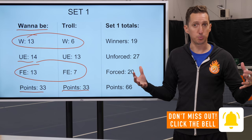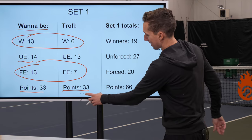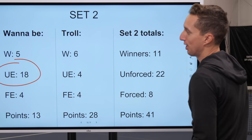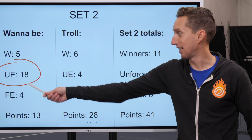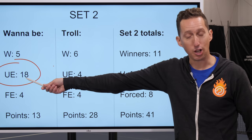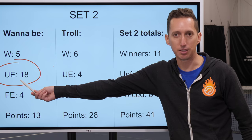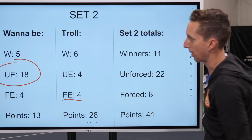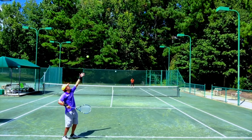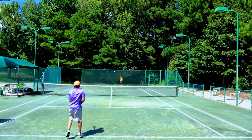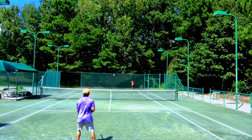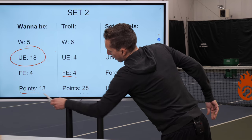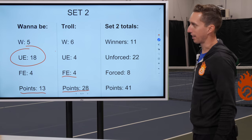When Wannabe Pro won that set, he did exactly what he planned. In set number two, his unforced errors hit 18, but now he has less than a third of those in winners. Clearly he was still going for a lot, making a lot of mistakes, but it wasn't working out. Tons of unforced errors, very few winners, not many forced errors either. Tennis Troll was just playing middle-of-the-road, safe cross-court shots while Wannabe Pro sprayed the ball everywhere. This set was over very quickly.